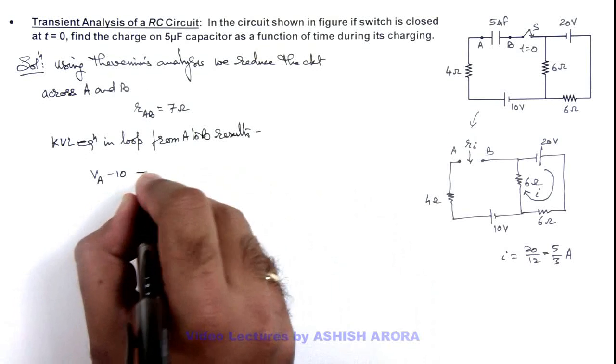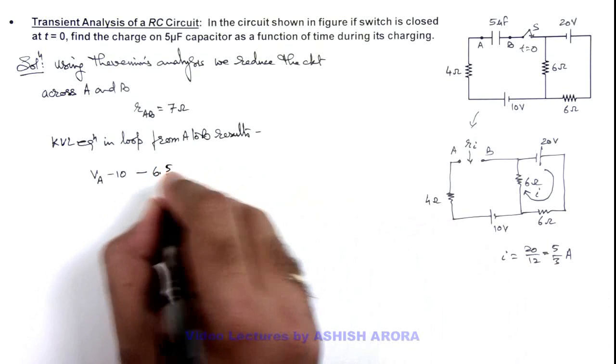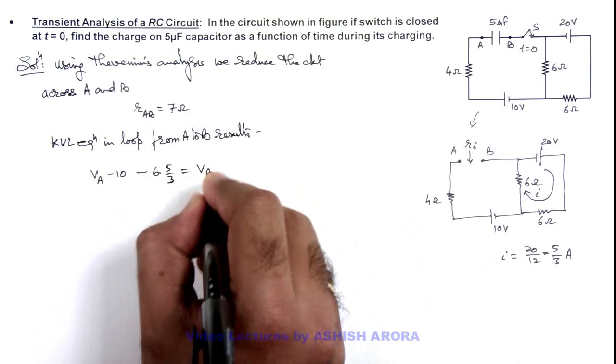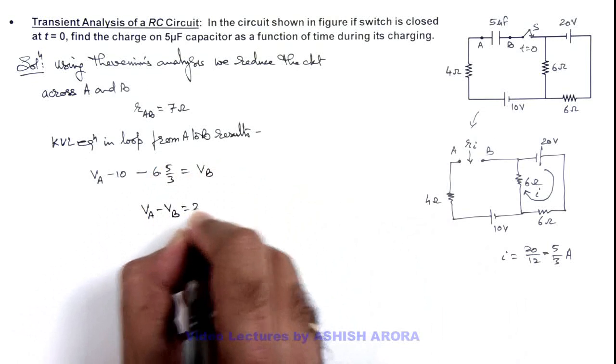And then it is minus 6i, that will be 6 multiplied by 5 by 3, is equal to V_B. So V_A minus V_B we are getting is 20 volt.